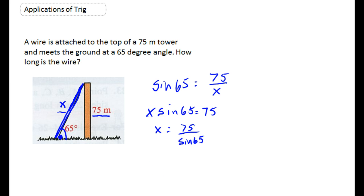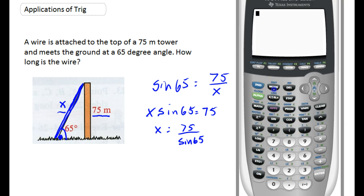It's calculator time. Don't forget to make sure that you are in degree mode. I am. So I'm going to go 75 divided by sine of 65. And the tower, or the wire actually, is 82.75 meters.